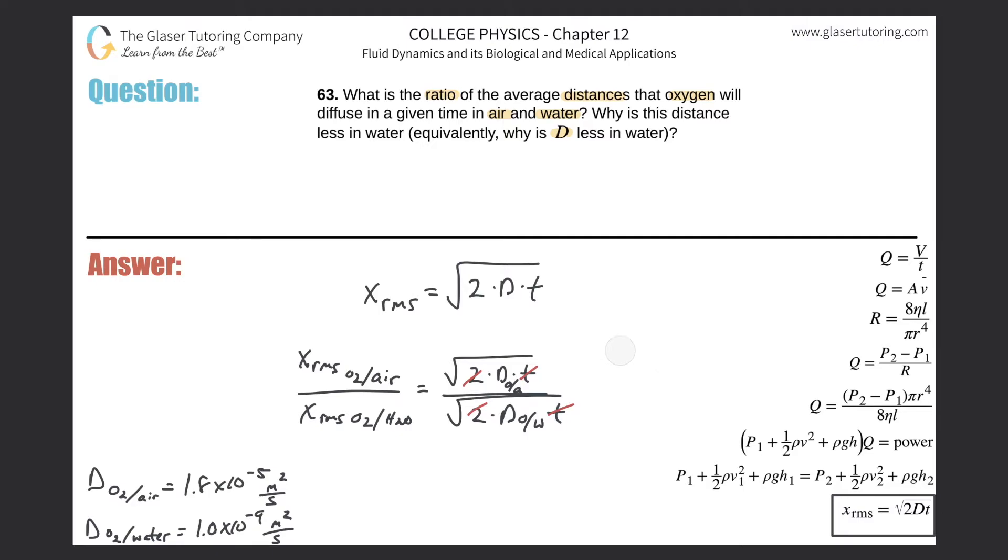Now what we realize is that to do this, it's just a simple ratio between √(diffusion constant of oxygen in air) to that of the diffusion constant of oxygen in water. You can reorganize this too - since both are under the square root sign, you can simply take a big square root and do D_O₂/air divided by D_O₂/water.